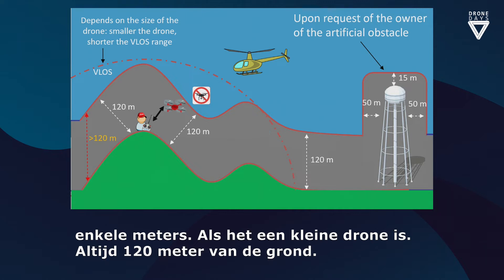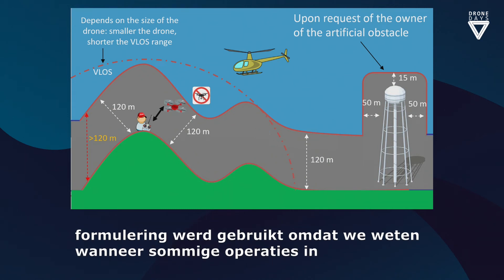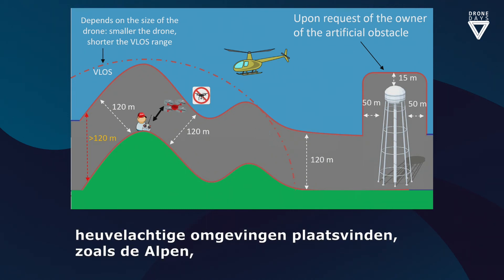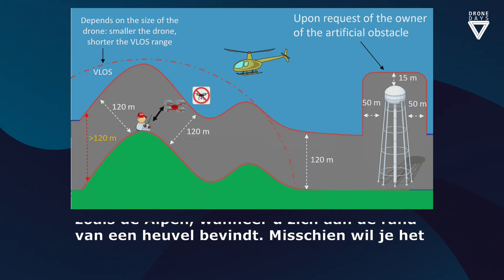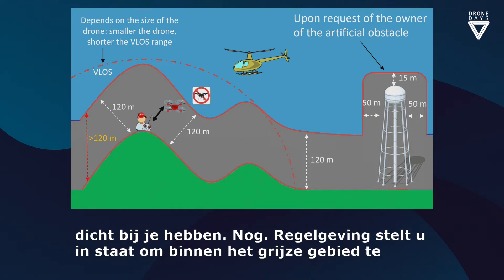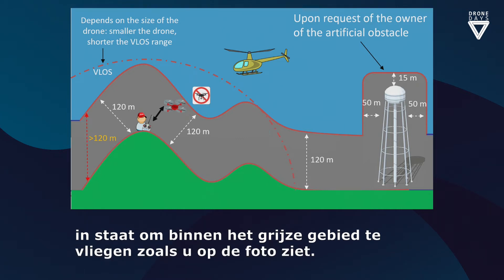The reason for the formulation 'surface of the ground' is that when some operations are conducted in a hilly environment — close to the Alps, for example — you may be on the edge of a hill where the drone is close to you but quite high from the ground below. The regulation allows you to fly within a certain boundary as shown in the slide. If there is an obstacle higher than 120 meters, you are still allowed to fly close to the obstacle.